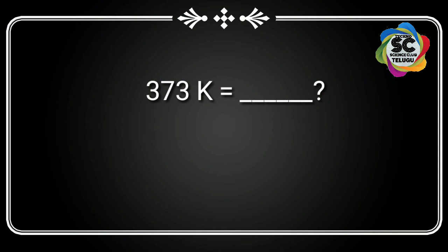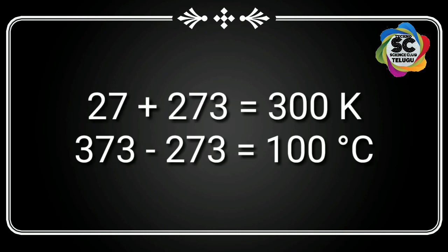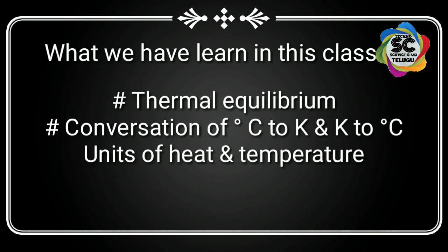To convert from kelvin to degree Celsius, we subtract 273. For example, 373 kelvins minus 273 equals 100 degree Celsius. So by adding 273, degree Celsius is converted into kelvins, and by subtracting 273, kelvins are converted into degree Celsius. Today in this class we learned about thermal equilibrium, the units of heat, units of temperature, and conversion of temperature units.